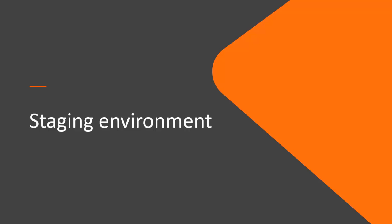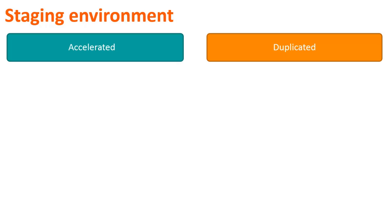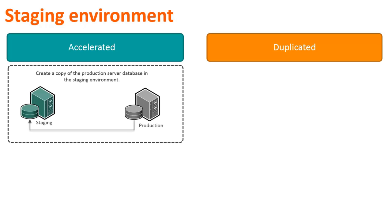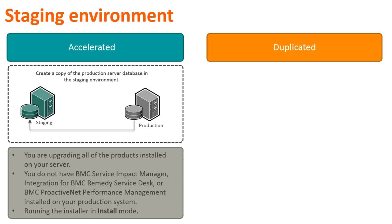To perform a parallel upgrade, it is important to understand how a staging environment is built. You can prepare a staging server by using the accelerated or the duplicated method. In the accelerated method, you prepare the staging server by creating a copy of the production server database in the staging environment — that's why this method is also called a database-only upgrade. You can use this method if you are upgrading all of the products installed on your server, and if you do not have BMC Service Impact Manager, Integration for BMC Remedy Service Desk, or BMC Proactive Net Performance Management installed on your production system. After preparing the staging server, to upgrade the components to the latest version, you must run the installer in the install mode.